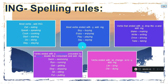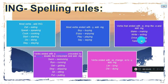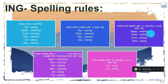If the verb ends in the letter -E, we remove that -E and then add -ing. For example: make→making, write→writing, drive→driving, take→taking. Only when the verb ends in -E do we drop it before adding -ing.